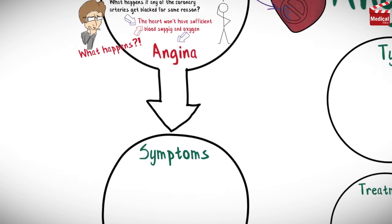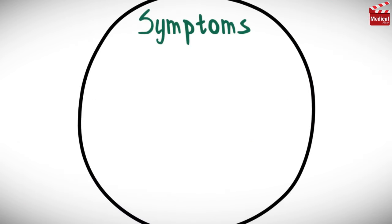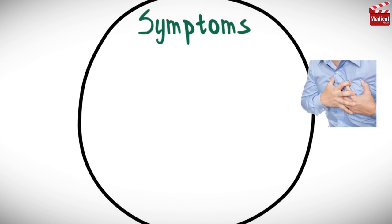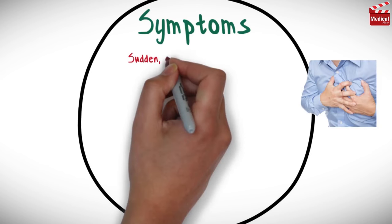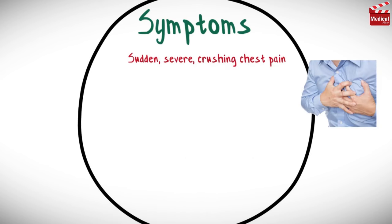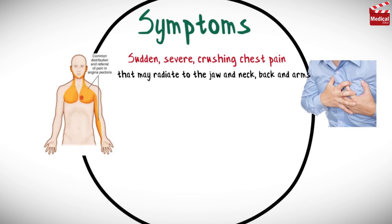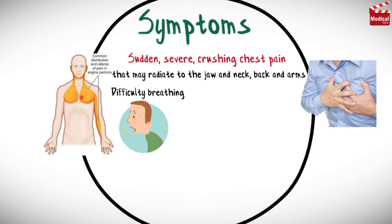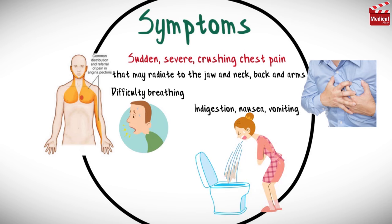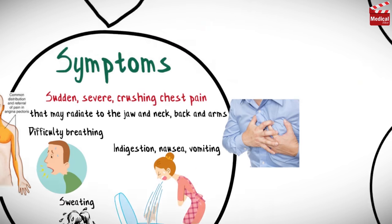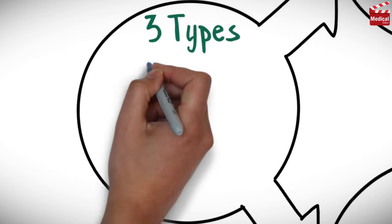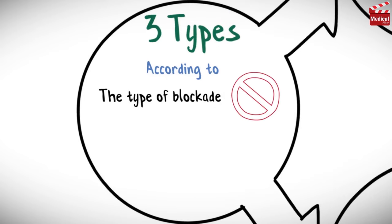When the heart doesn't receive enough blood, that leads us to the symptoms of angina. Typical angina pectoris is characterized by a sudden, severe, crushing chest pain that may radiate to the jaw, neck, back, and arms. Patients may also suffer from difficulty breathing, or atypical symptoms such as indigestion, nausea, vomiting, or sweating.